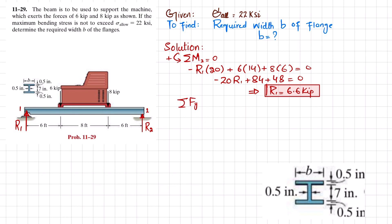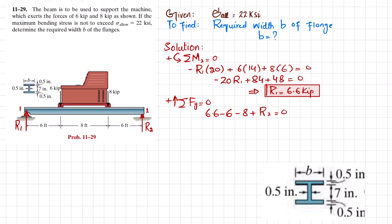Now find R2 using sum of all forces in the Y direction equals zero, with upward forces positive. So R1 minus 6 minus 8 plus R2 equals zero. Substituting R1 = 6.6: 6.6 minus 6 minus 8 plus R2 equals zero, giving R2 = 7.4 kips.